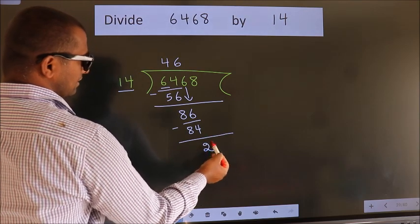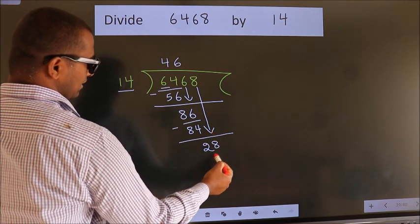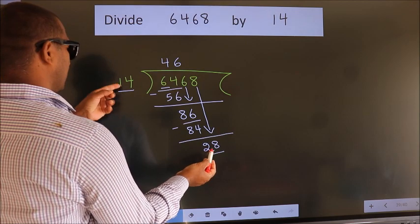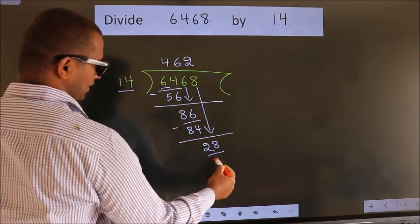After this, bring down the next number, 8. So we have 28. When do we get 28 in the 14 table? 14 times 2 is 28.